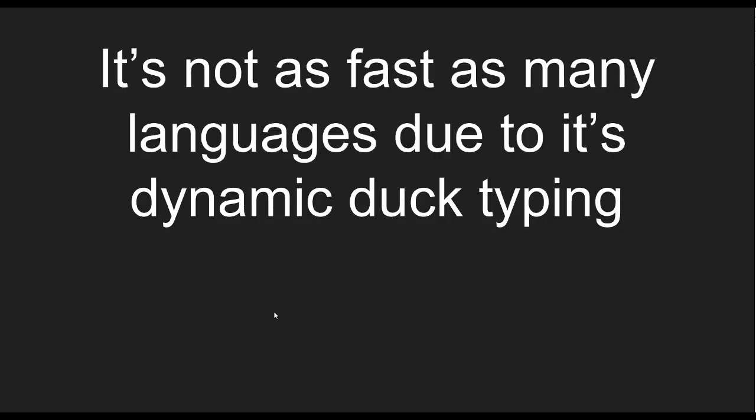Next: Python is not as fast as many languages due to its dynamic duck typing. Duck typing goes back to the phrase 'if it walks like a duck and quacks like a duck, it is a duck.' In Python, you declare methods without giving any advance indication of what type of value they'll return — whether it's a string, a list, a dictionary, or whatever. You can pass in whatever you want and Python treats it as it sees fit. That dynamic nature makes Python slower than other languages.